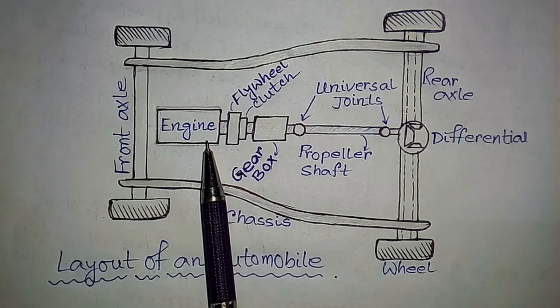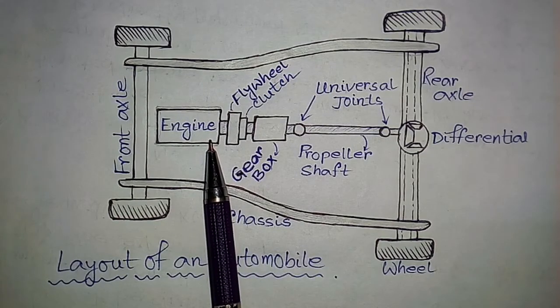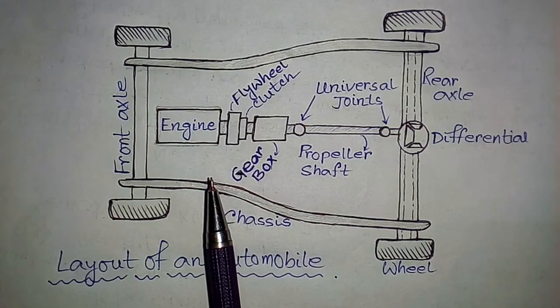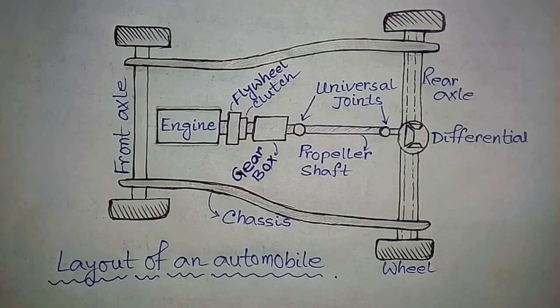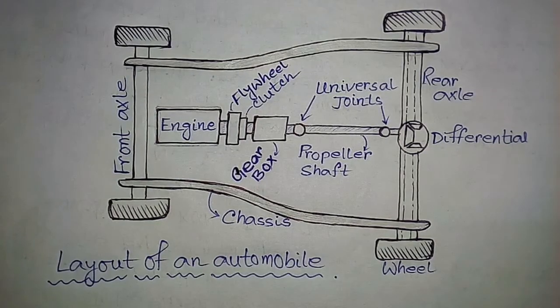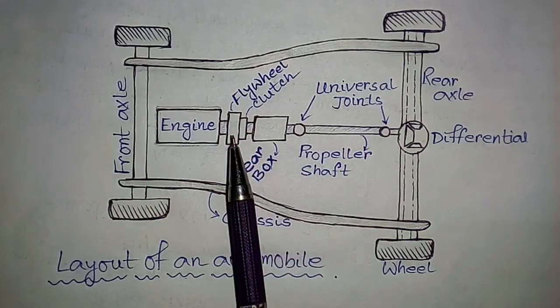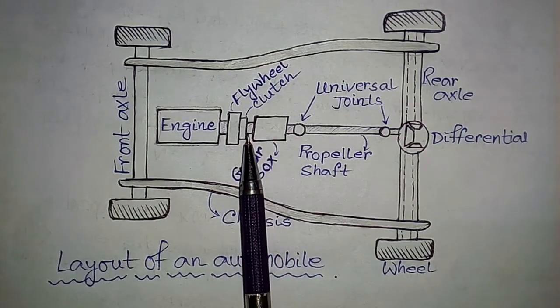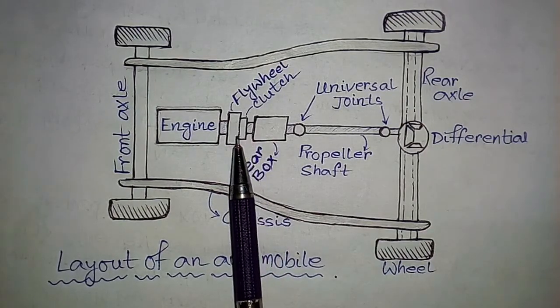This is the engine, also called the power unit of the automobile. Then this power is transmitted to the flywheel which is connected to the gearbox through clutch. So this is the flywheel, this is the gearbox, and this is the clutch.